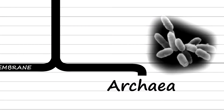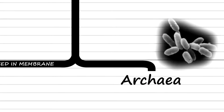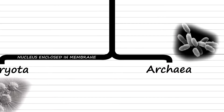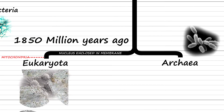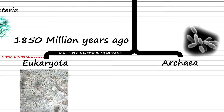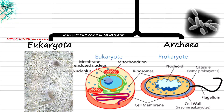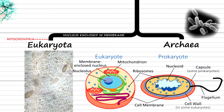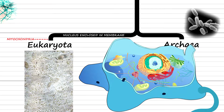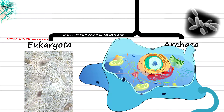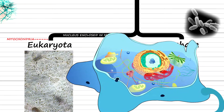The first evidence of eukaryotes is thought to date from around 1,850 million years ago, and they are thought to have evolved from archaea. They are characterized by the nucleus of their cells being enclosed in membranes.